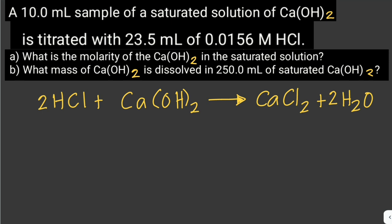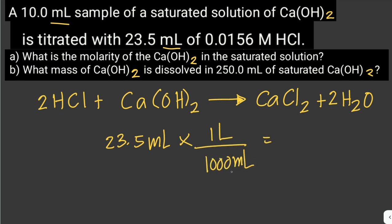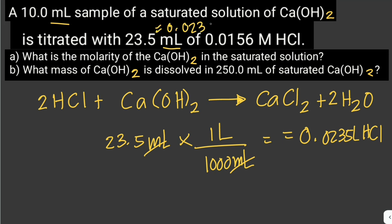Let's answer the first question: what is the molarity of calcium hydroxide in the saturated solution? Notice that we're given the volume in milliliters, so we need to convert that to liters. So 23.5 milliliters converts to 0.0235 liters of hydrochloric acid.